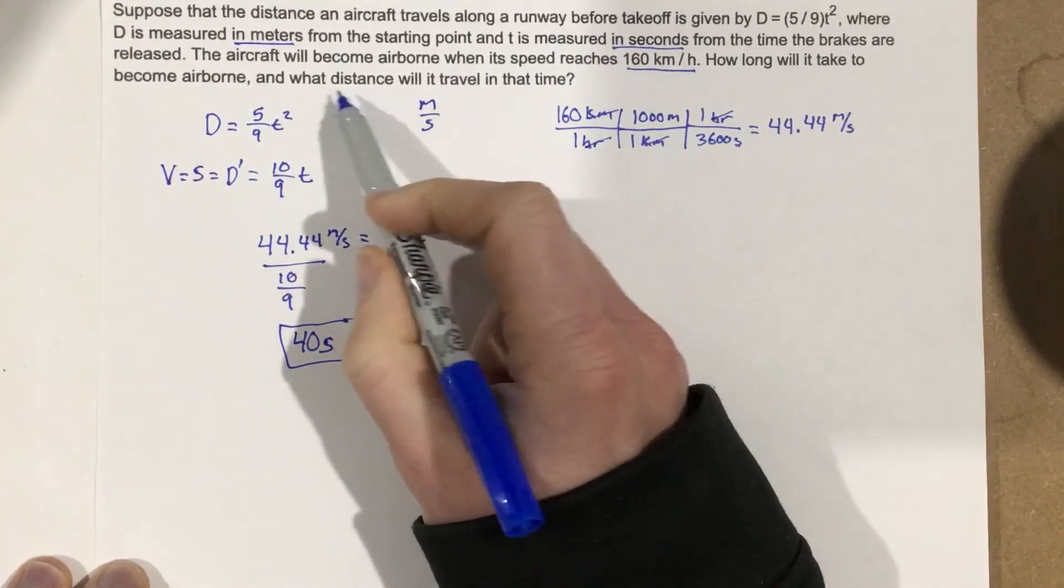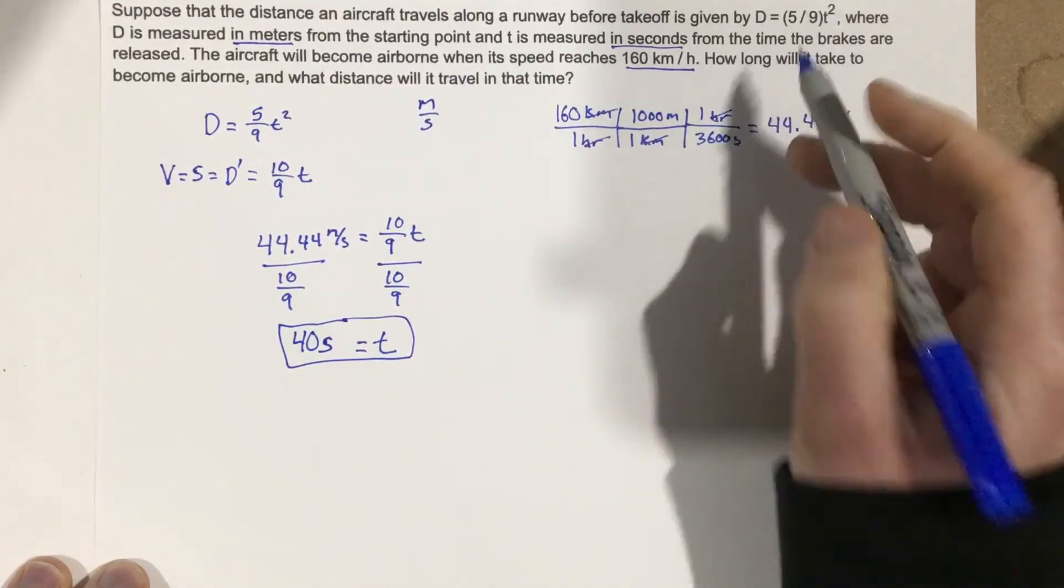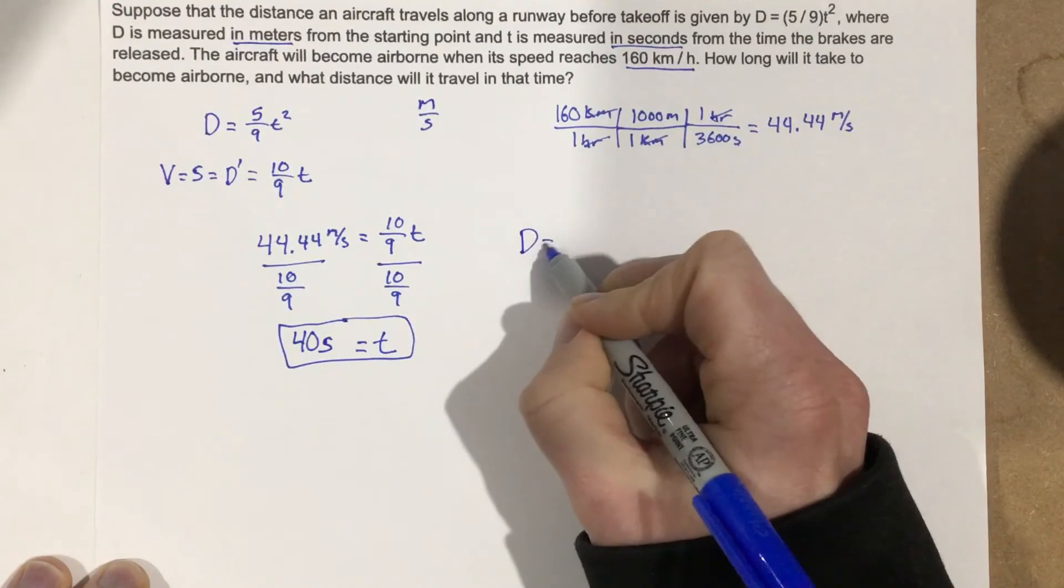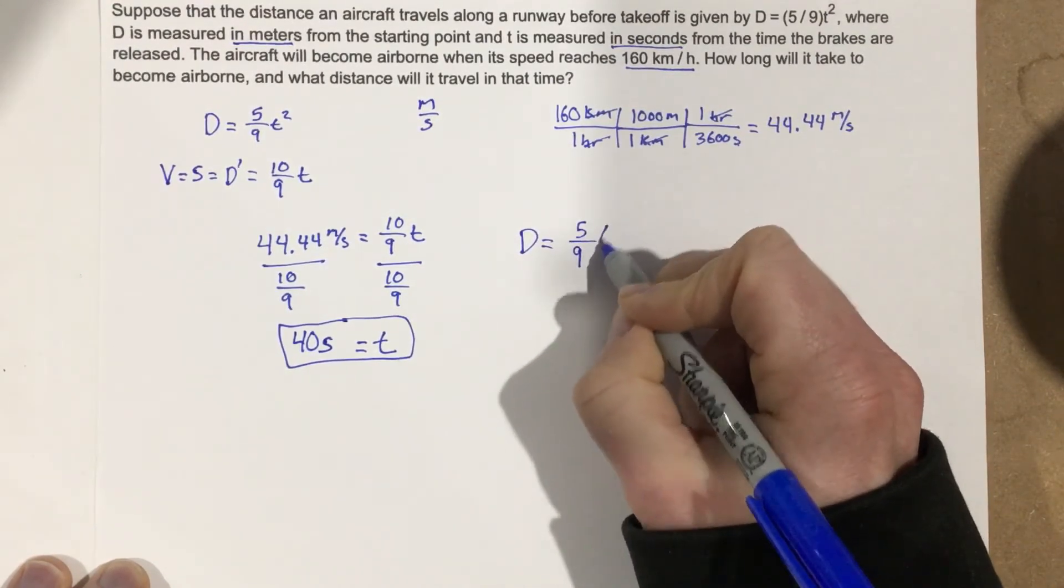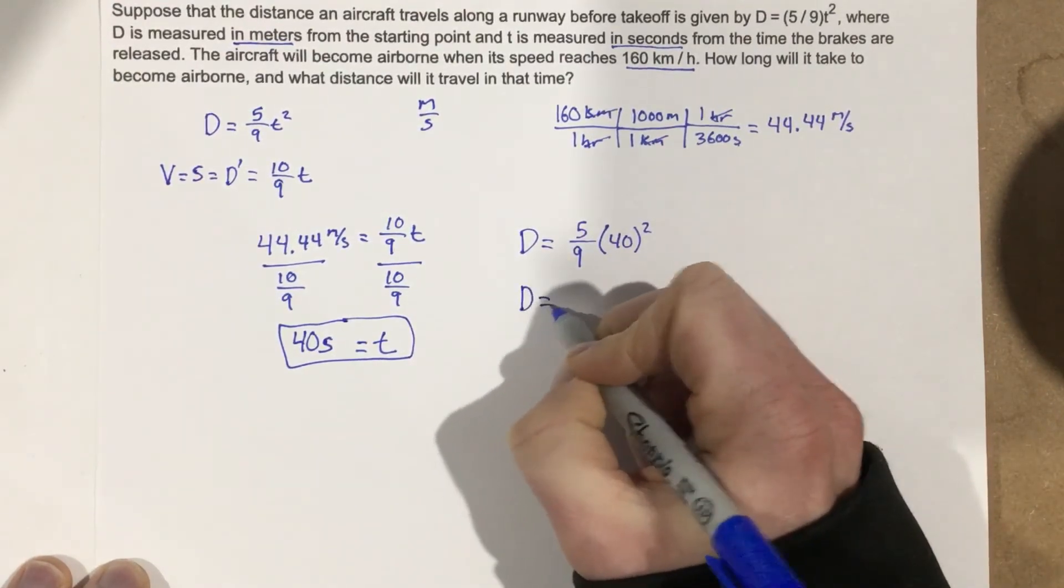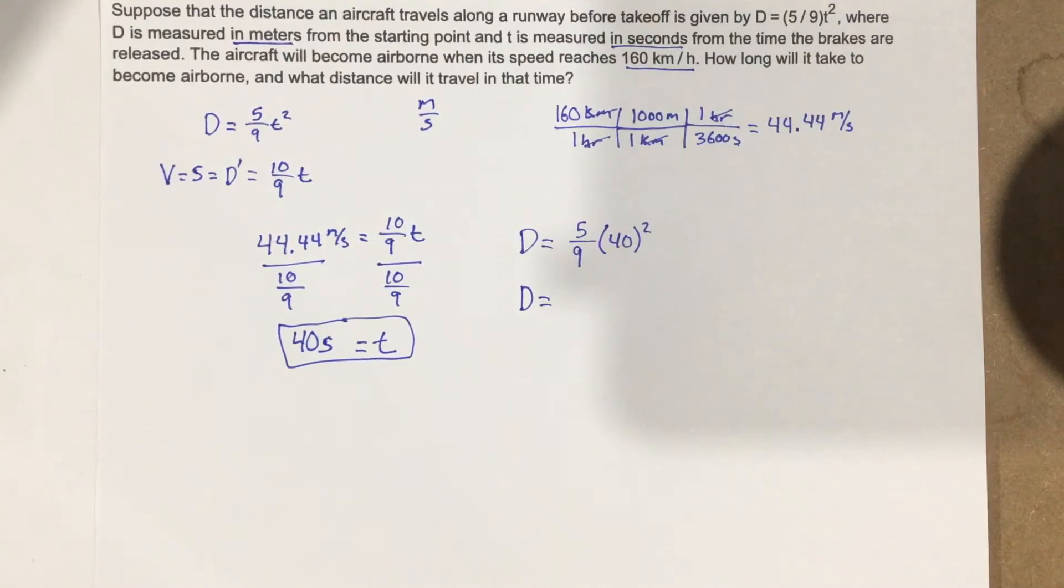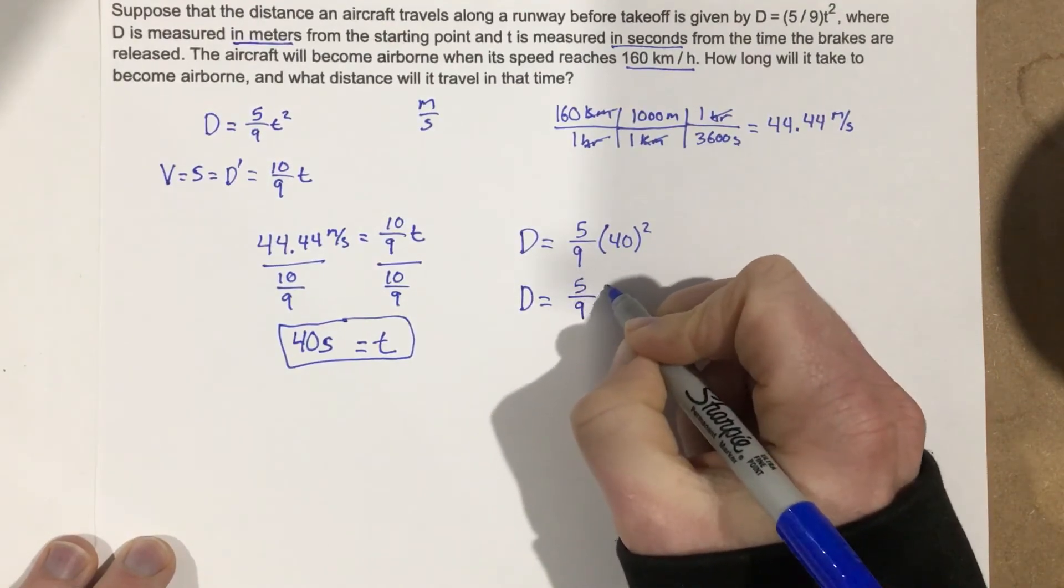It says what distance will it travel in that time? Well we just need to take the distance equation and say 5 ninths, 40 squared here. Well we can go ahead and multiply that, 40 squared, that's how many seconds it takes to get airborne, to 1600. So we have 5 over 9 times 1600.